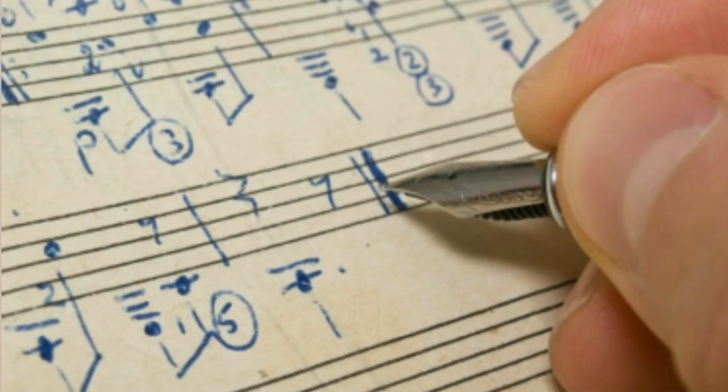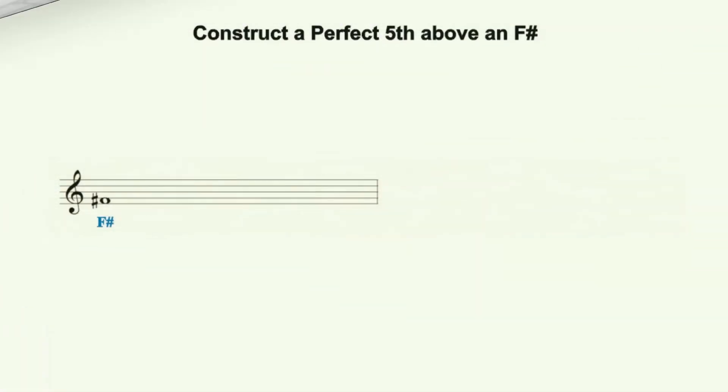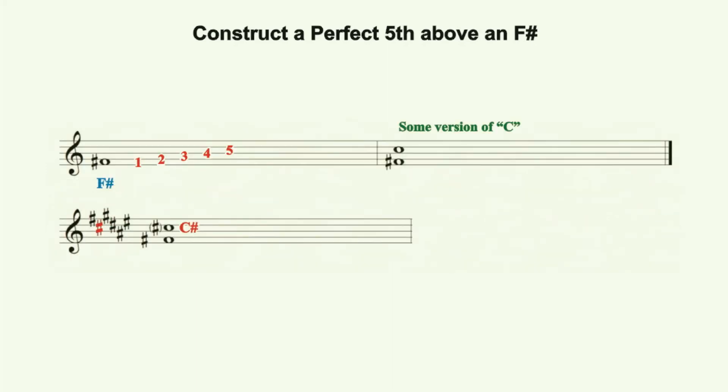Let's do some exercises constructing intervals upon notes other than C natural. For example, first construct a perfect 5th over an F sharp. First, notate the F sharp at the specific pitch desired. Beginning with the F sharp labeled as 1, count upward 5 lines and spaces. We know that our 5th will be some version of C. Bringing to mind the key signature for F sharp major, 6 sharps, we determine that the diatonic version of our C occurs as a C sharp. Since the 5th that we have created conforms to the key signature for and is diatonic to F sharp major, this 5th is a perfect 5th and requires no modification.